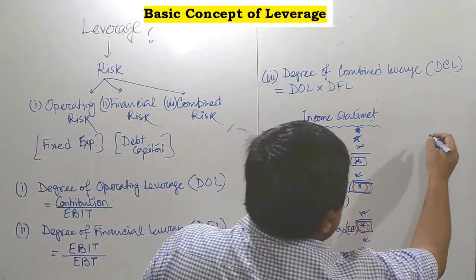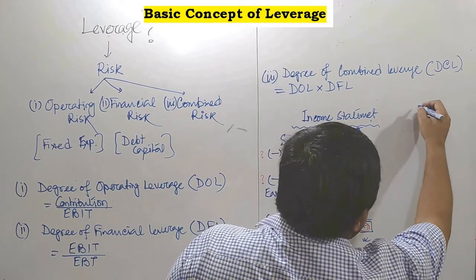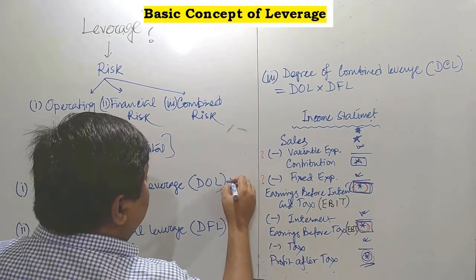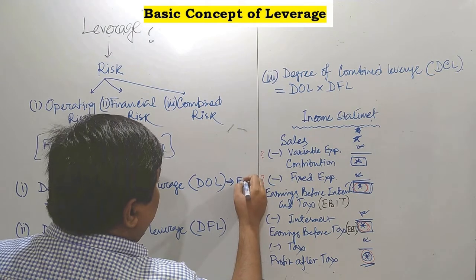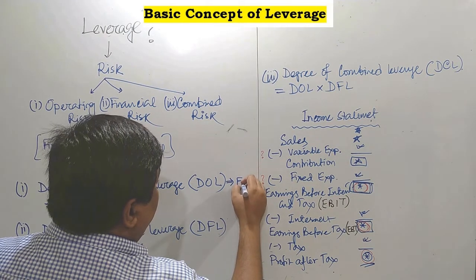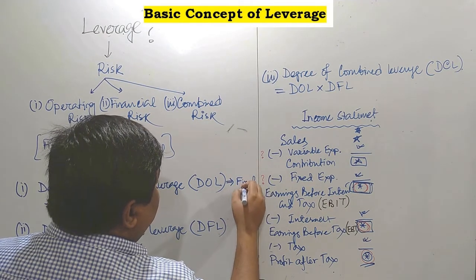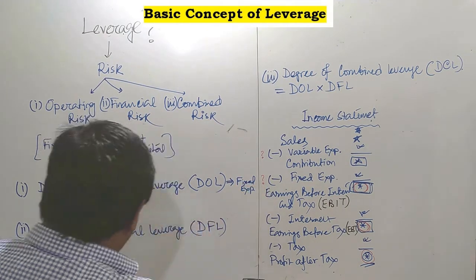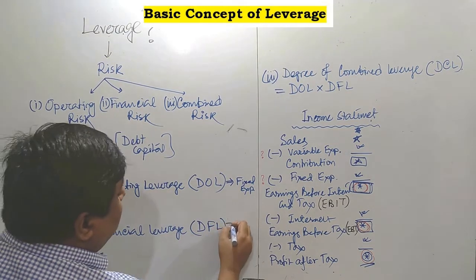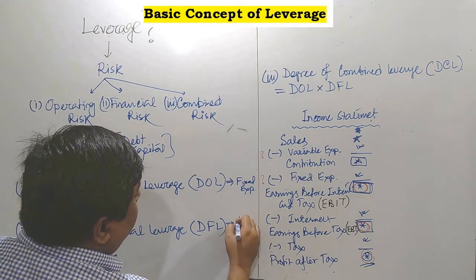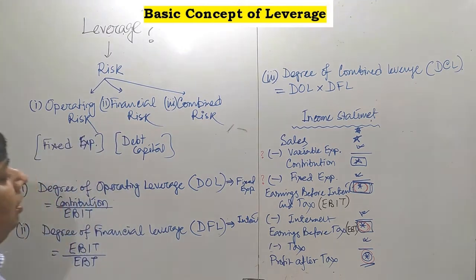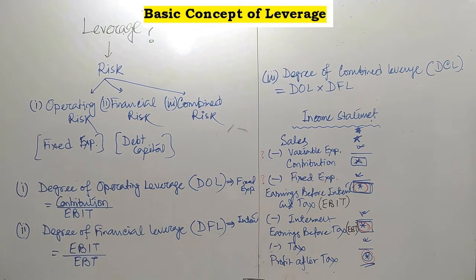Degree of operating leverage, or DOL, is basically related to your fixed expenses. Similarly, DFL is related to your interest. How are such things interrelated? The DOL formula is contribution by EBIT, and DFL relates to how much interest you are paying on your debt capital.